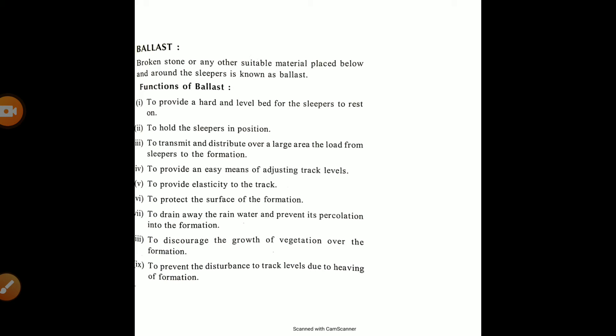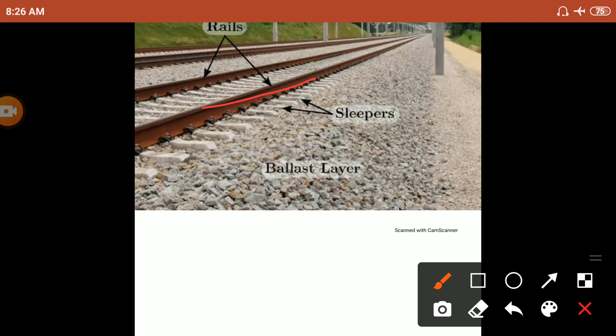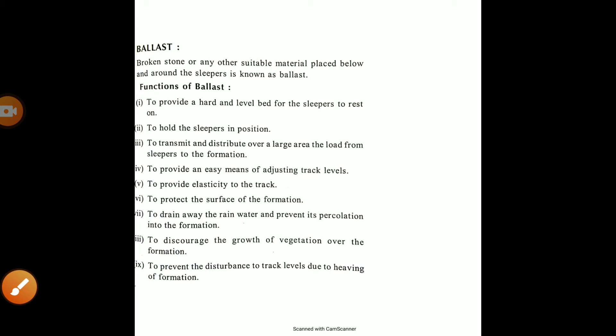The third component is ballast. Ballast is broken stone or any other suitable material placed below and around the sleeper. The function of ballast is to provide a hard and level bed for the sleeper to rest on.